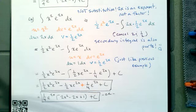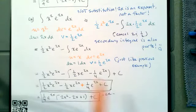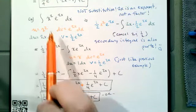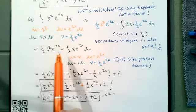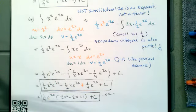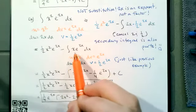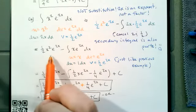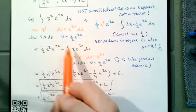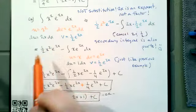A student asked: we had to do parts twice, but how did we keep the integral after doing parts the first time? That's part of the parts formula itself — the integral of U dV equals UV minus the integral of V dU. That remaining integral is always part of the formula. The UV term is already done — no integral sign there — but we still have to evaluate the integral of V dU.